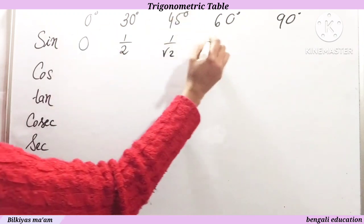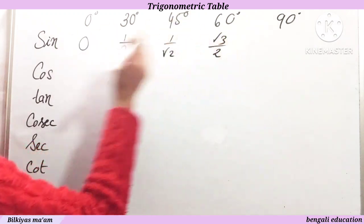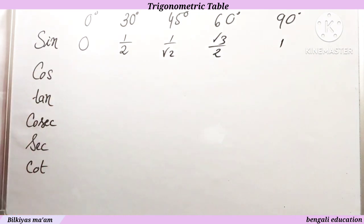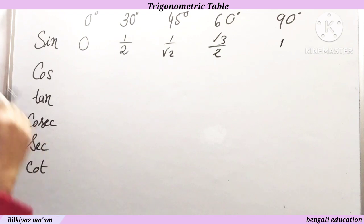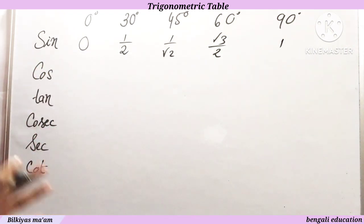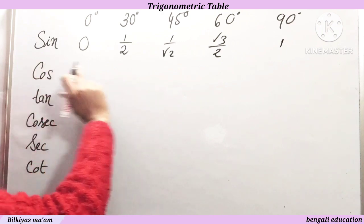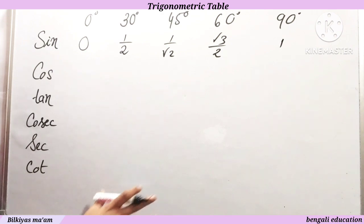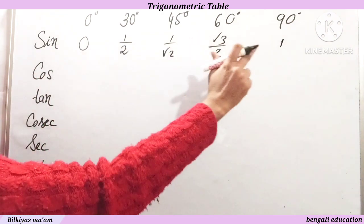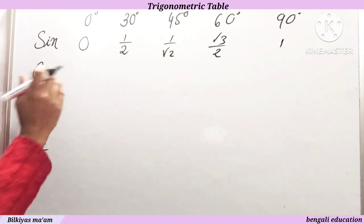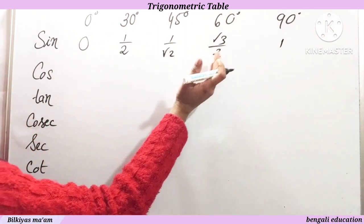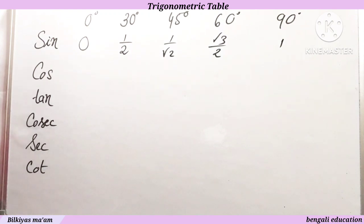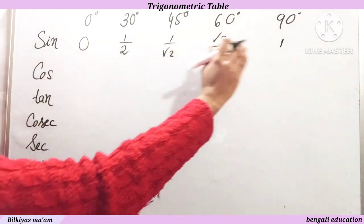This is 1 upon root 2, sin 60 is root 3 upon 2, and sin 90 is 1. I would recommend the last one. Sin 0 is 0, sin 30 is half, sin 45 is 1 upon root 2, sin 60 is root 3 by 2, sin 90 is 1. This sin and army line will be written.